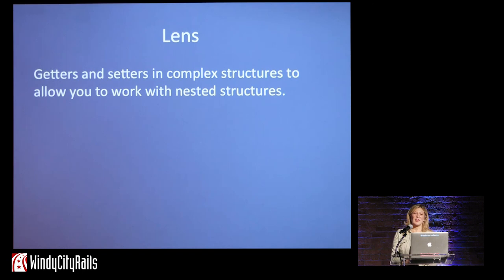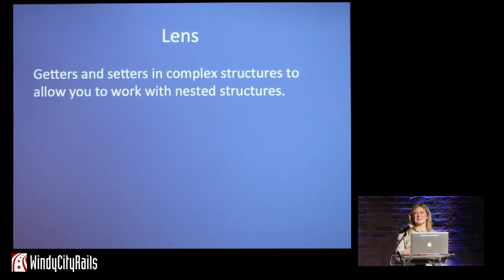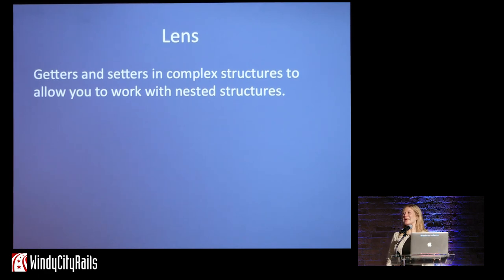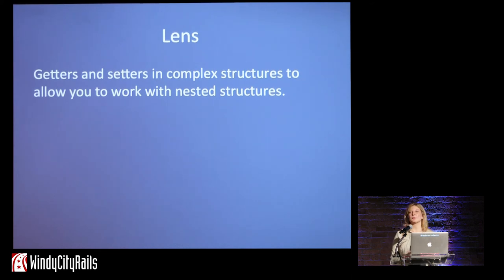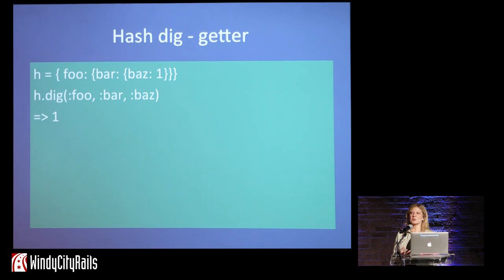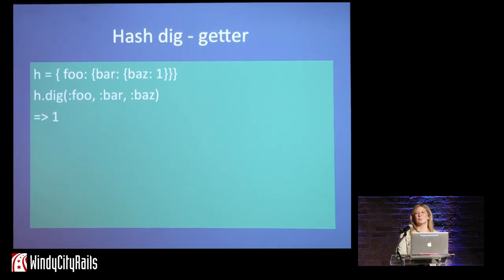The last thing I want to talk about is Lens. Lens is another really popular thing at the moment. Essentially it's a complex way to define a pattern that was needed in functional programming languages. Design patterns are created because of problems in languages — so does that mean there was a problem in functional languages? Actually, the ability to get and set a value in a nested structure is not that straightforward in Haskell — there's a lot of boilerplate code involved. So let's talk about getters and setters. If I've got a nested structure like foobar.baz with a value of 1, Ruby gives me dig — it's really easy, declarative, simple.